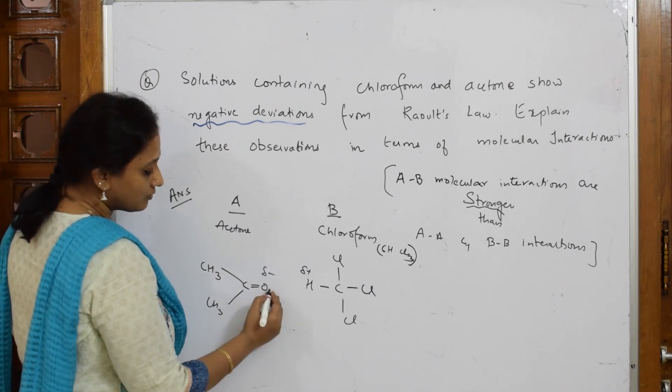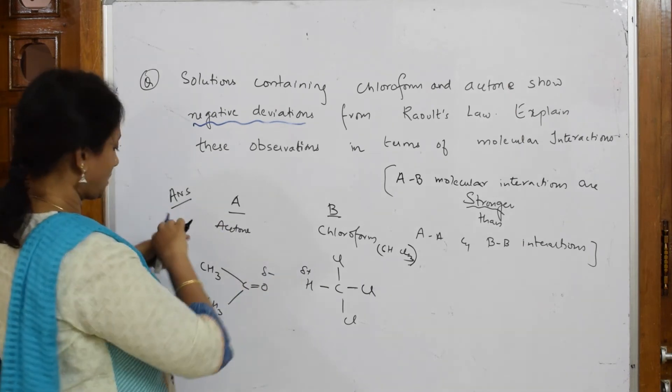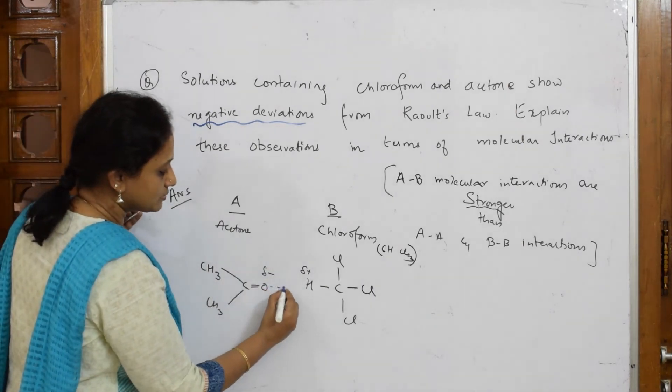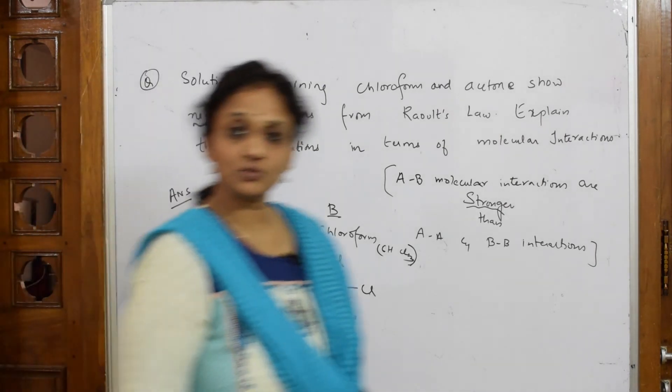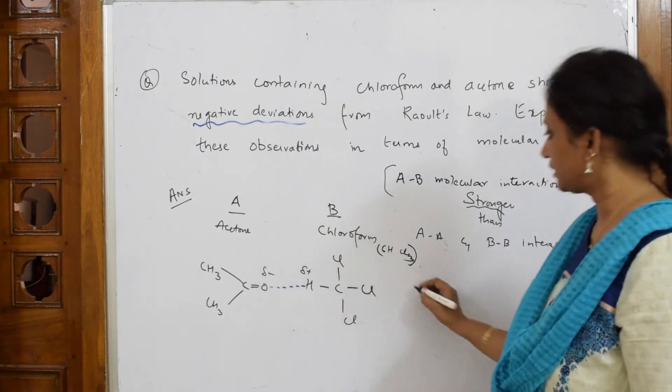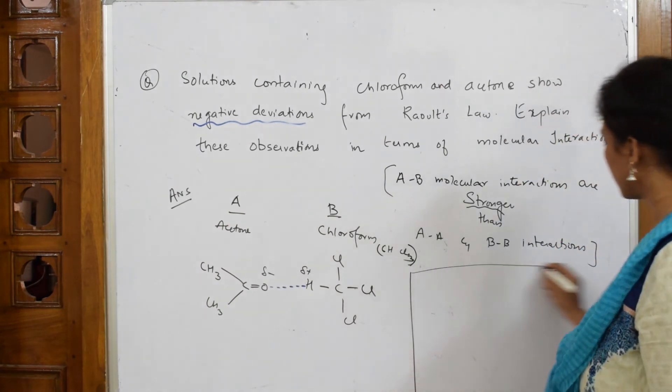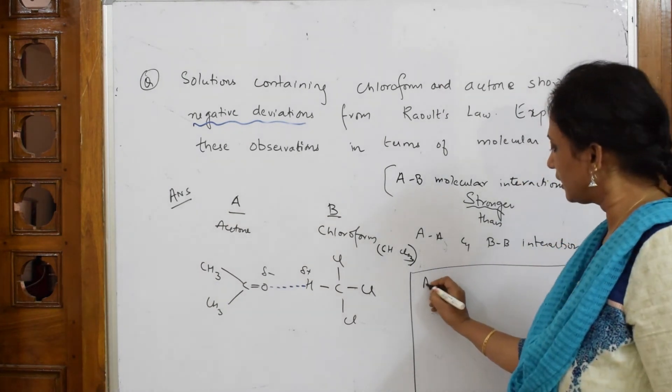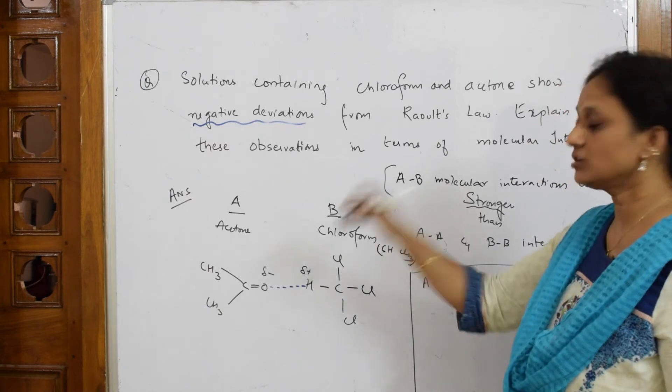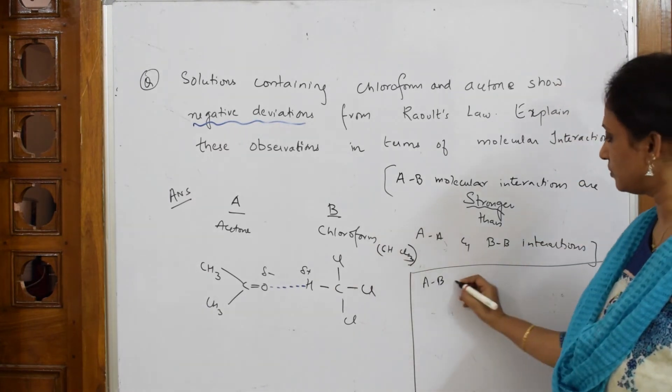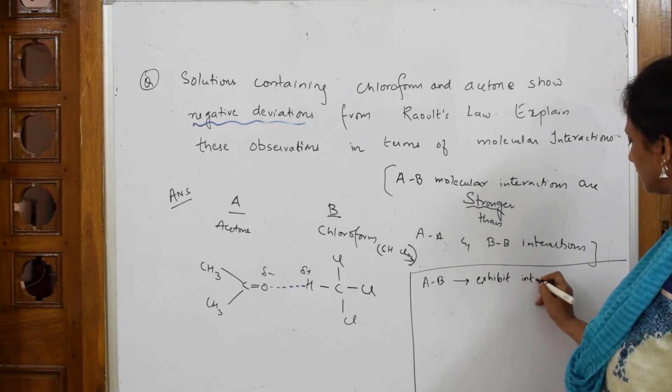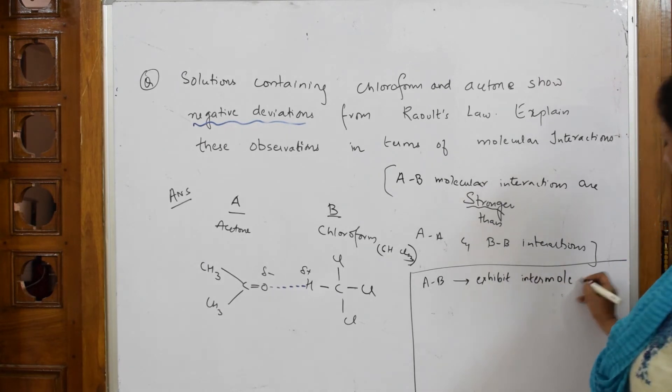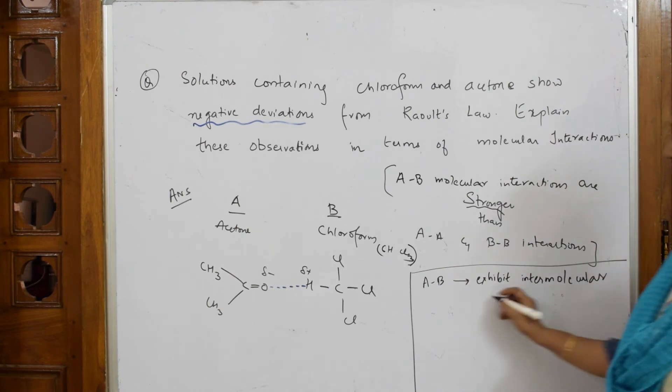Now this is your chloroform, isn't it? So what happens with this chloroform - this is partially positive, and a hydrogen bond forms between them. A hydrogen bond forms between A and B. We very well know hydrogen bond is most important. A and B, that is your acetone and chloroform, are going to exhibit intermolecular hydrogen bonding.